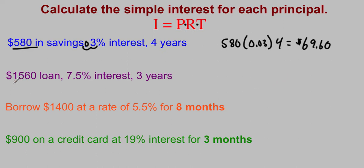Next one, $1,560 loan, that's P, that's your principal. Your rate is your interest rate, 7.5% or 0.075. And then for 3 years, that's your time, multiply times 3.